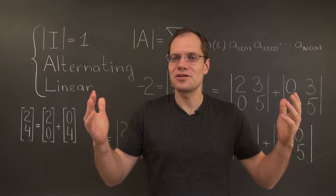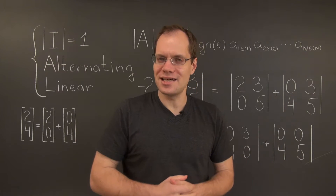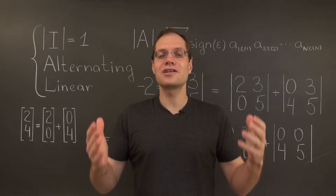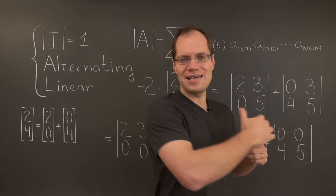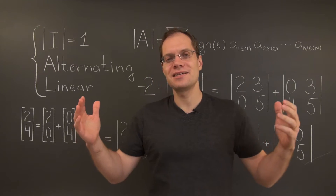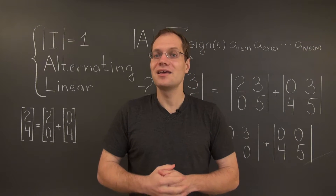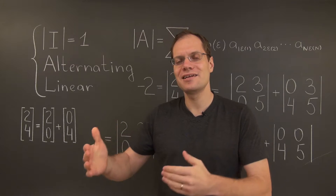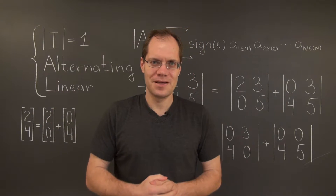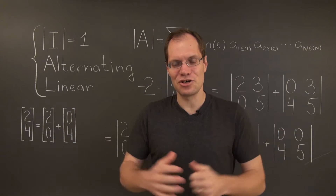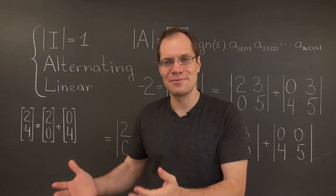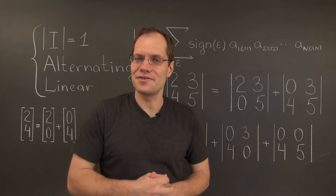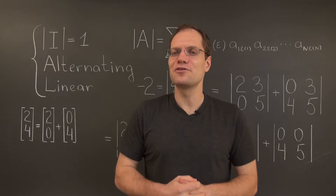Why temporary? Because we're still not done. We would still have to do the same thing to the third column in each of the nine determinants, representing it as a sum of three vectors each with a single non-zero entry, and then apply the linear property to that column. Each of the nine determinants will turn into a sum of three, giving us a grand total of 27 — three to the power of three.